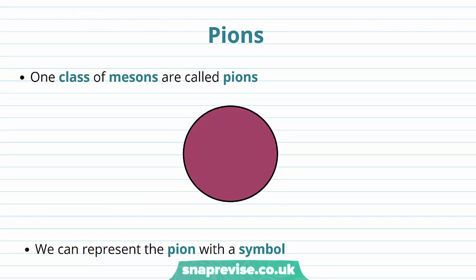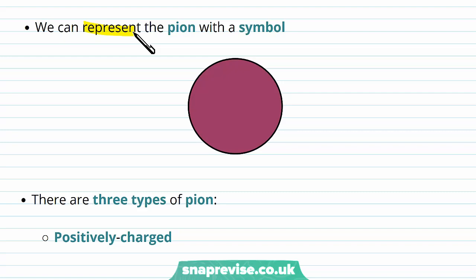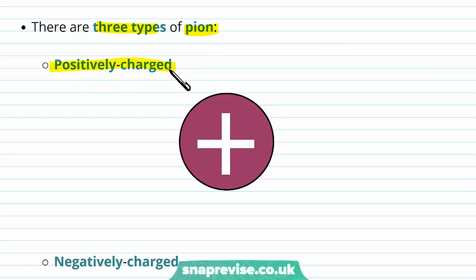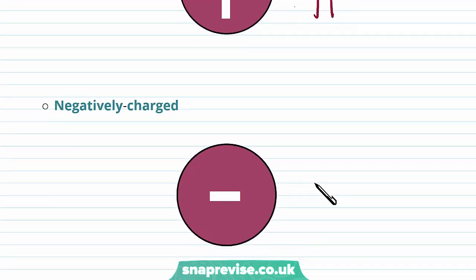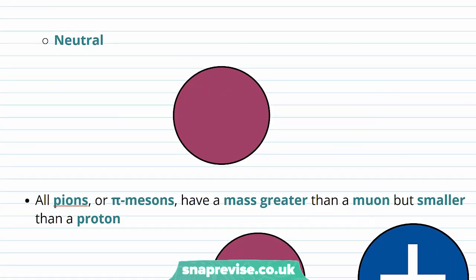One class of mesons are called pions. We represent the pion with the Greek letter pi. There are three types of pion: the positively charged pion with symbol π+, the negatively charged pion with symbol π−, and the neutral pion with symbol π0.